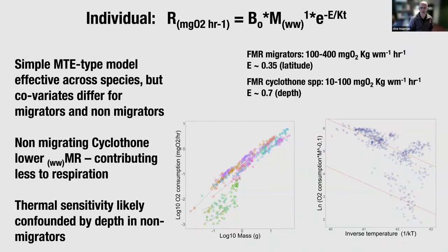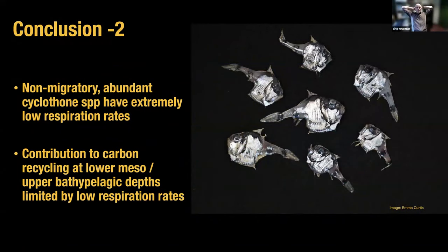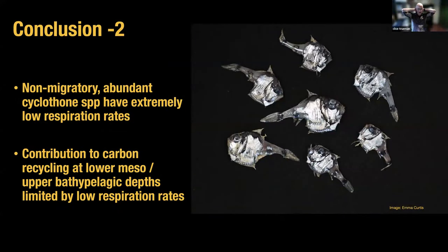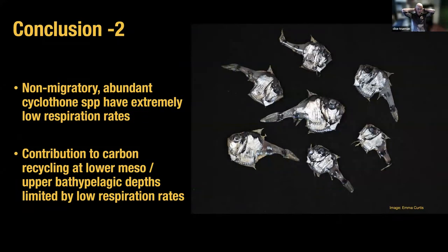The otolith method is remarkably consistent across taxa and is proving to be a very reliable record reflecting what we know about activity levels. I think it's a very tractable way of extracting metabolic rate data from otherwise quite inaccessible fishes.